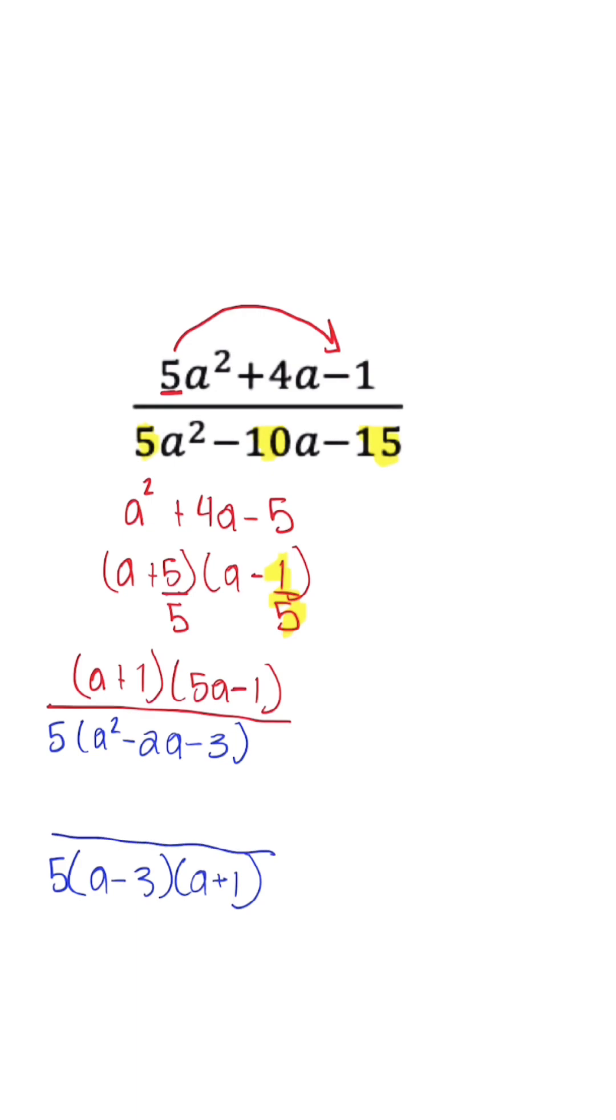And then we're going to put our numerator on top, (a+1) times (5a-1). Now when we look at our common factors, we could cancel out (a+1) with itself, and what we're left with is going to be (5a-1) all over 5 times (a-3).